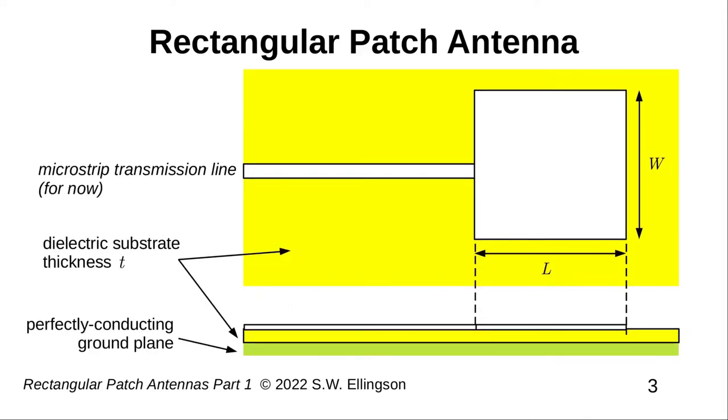Here's a picture of what we're talking about. The antenna consists of a rectangular patch implemented on a printed circuit board. The printed circuit board consists of a top layer, in this case including the patch, a dielectric substrate, and a ground plane.